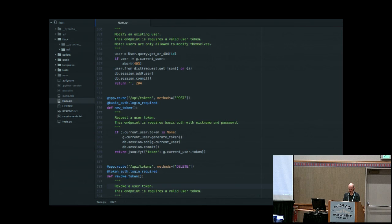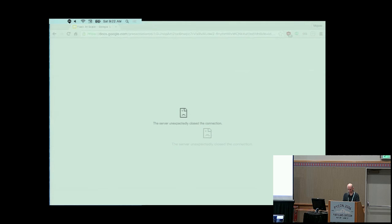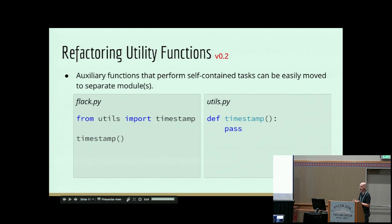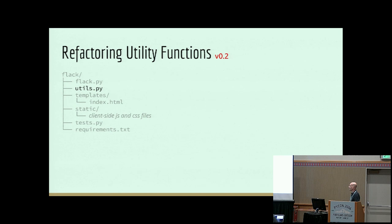For the first version, I'm going to take 'timestamp' and 'url_for' — those two utility functions — and move them. All I do is take them into utils.py, and then in flack.py I just import them. These are easy functions, so this isn't causing any trouble. Now I have utils.py added — this is version two.